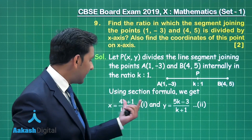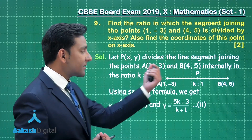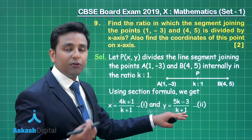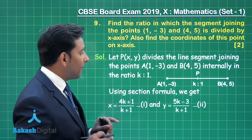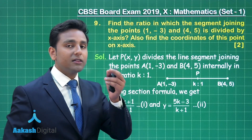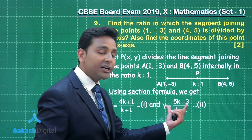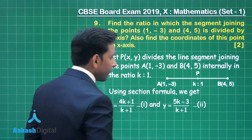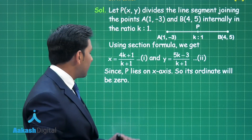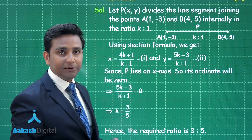Using the section formula, x equals (4k plus 1) divided by (k plus 1), where m is k and n is 1. Similarly, y is found using the section formula. Since the line segment divides the x-axis, the y-coordinate of point P is 0. So we write: (5k minus 3) divided by (k plus 1) equals 0. Since P lies on the x-axis, its ordinate is 0.